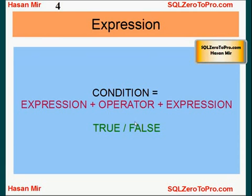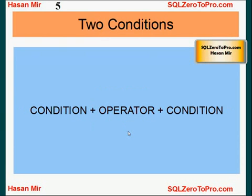If the final result is true, the row will be selected for display; otherwise the row will not be selected. Now let's complicate things a bit — you can also join conditions together using logical operators. You can put two conditions together and separate them by either AND or OR, for example: WHERE ID is equal to 2 OR WHERE ID is equal to 3.